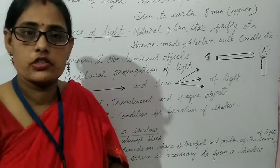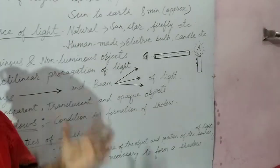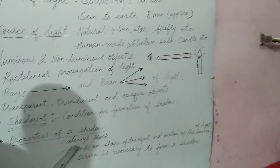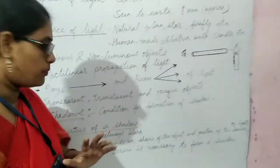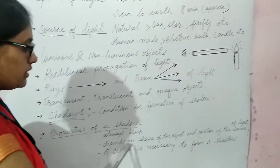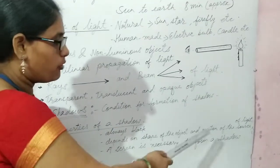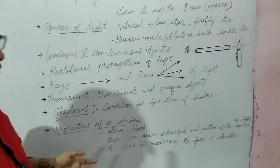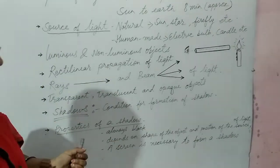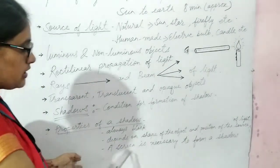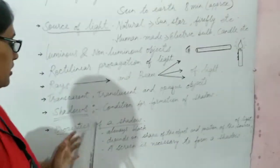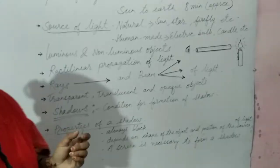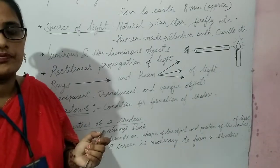The properties of shadow are as follows: a shadow is always black; it depends on the shape of the object and the position of the source of light; and a screen is necessary to form a shadow. These are some of the key properties of a shadow.